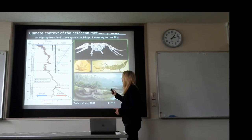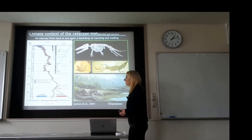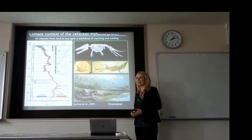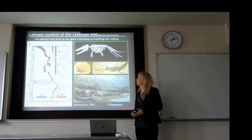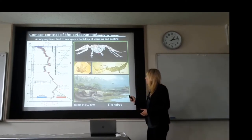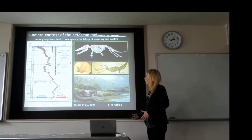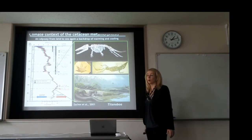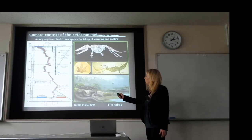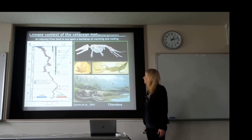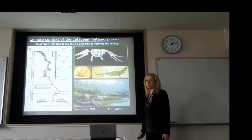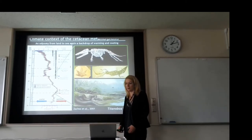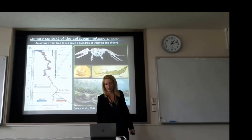Here we have one of these early, archaic whales — its name is Ambulocetus, also known as the walking whale that swims. You can see that it has adaptations in terms of power, flipper-like forms, and it also has an elongated sub-terminal snout for eating fish. But it also has long hind limbs, so it could walk and swim.